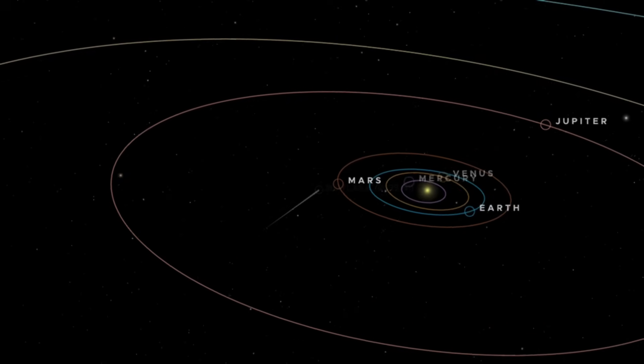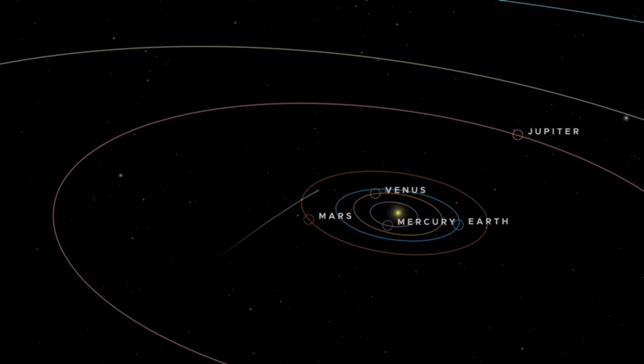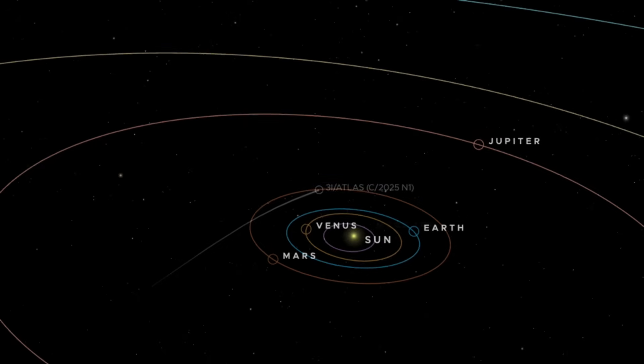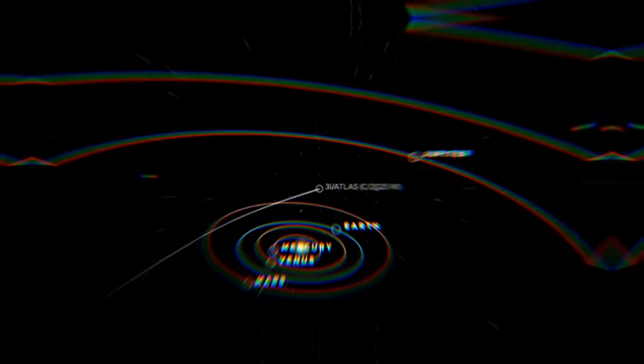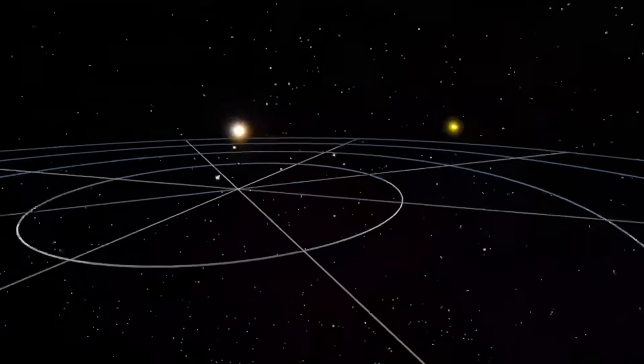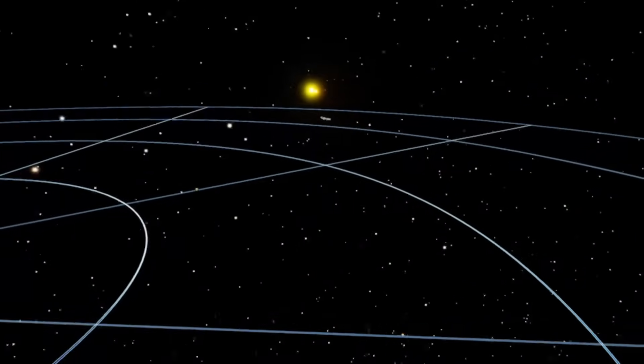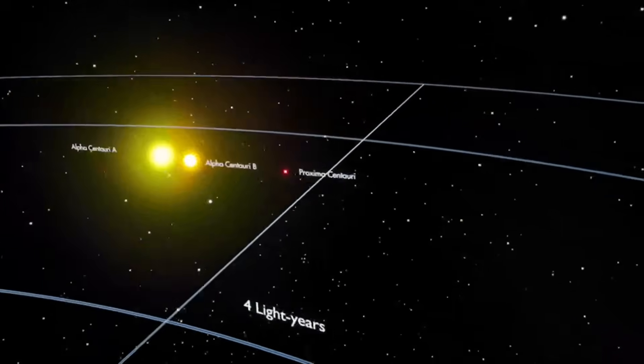On December 19th, interstellar comet 3i Atlas will make its closest approach to Earth about 170 million miles away, roughly twice the distance to the Sun. In cosmic terms, that's a whisper away. And what we're learning is rewriting the textbooks.